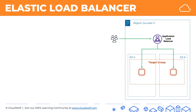The other huge advantage this brings is that now we have more resilience in our application. So for example, if one of these EC2 instances were to fail, the application load balancer is smart — it constantly does health checks at regular intervals, picks up that the instance has failed, and redirects traffic away from that instance to other instances in the target group. So there's your second huge advantage: your application now has higher availability.